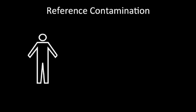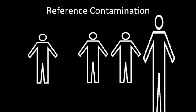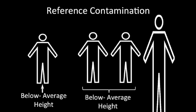One of the main considerations with the average reference montage is a concept called reference contamination. To conceptualize this, consider an average-sized man compared to a group of other average-sized men — we would say he is of average height. However, if one man in the comparison group is larger than the others, we would conclude that our gentleman is of below average height. This is the effect of the outlier in the comparison group, and will make all other men in the group appear to be of below average height, which can be very misleading.